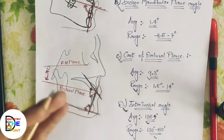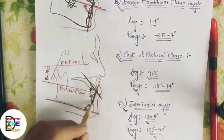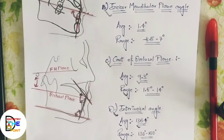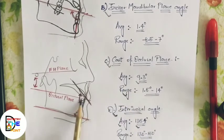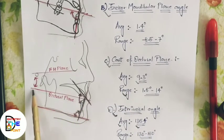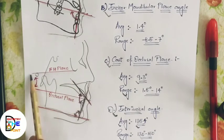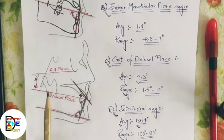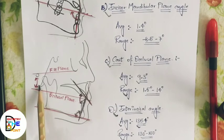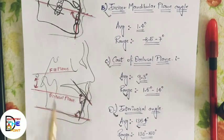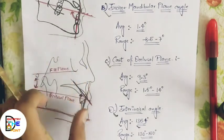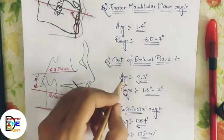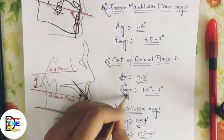The third dental parameter is the cant of occlusion. One line is drawn along the occlusal plane and a second line along the Frankfurt horizontal plane; the angle between these two lines is the cant of occlusion. This gives a measure of the slope of the occlusal plane relative to the Frankfurt horizontal plane. The average value is 9.3 degrees, ranging from 1.5 to 14 degrees.